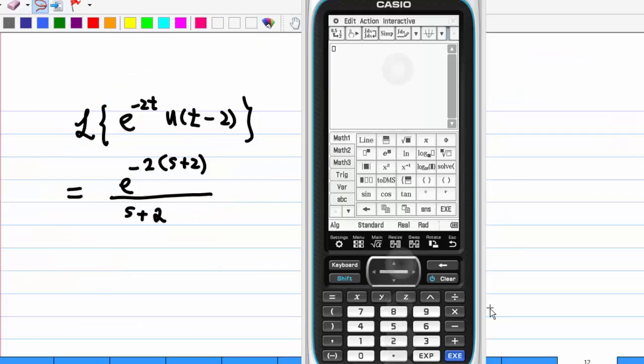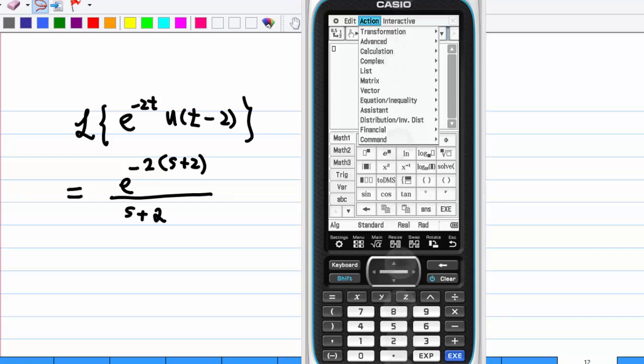Here is the demonstration using Casio ClassPad. I am going to find the Laplace transform of e to the minus 2t times Heaviside unit step function u of t minus 2. So, what I am going to do is go to action, select advanced, then select Laplace transform.